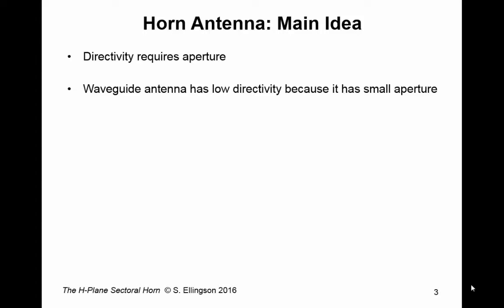Now, we know that a waveguide can be used as an antenna. In other words, you can have a waveguide that simply ends, and it will radiate. And, in that sense, it can be an antenna. But the directivity of such an antenna is low because it has small aperture.